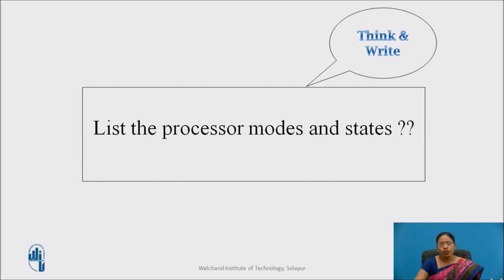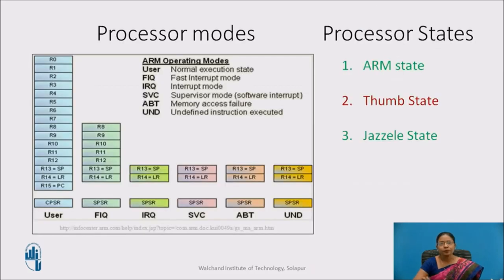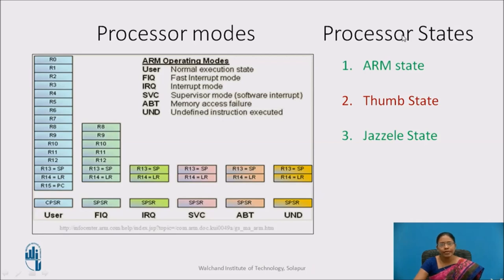I hope you have written the answer. These are the different processor modes: user mode, fast interrupt request mode, interrupt request mode, supervisor mode, abort mode, and undefined mode. These are the different processor modes. And the 3 different states are: ARM state, Thumb state, and Jazelle state.